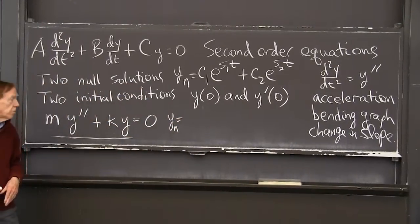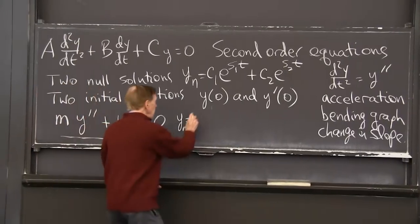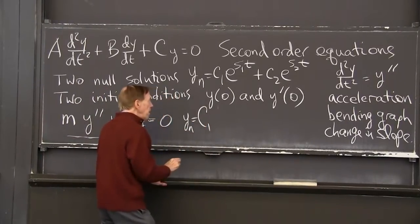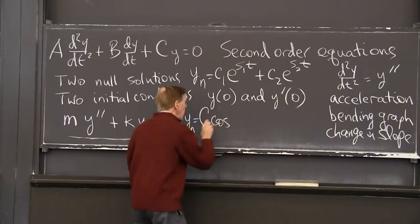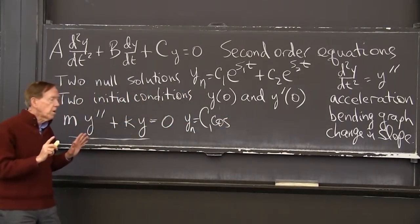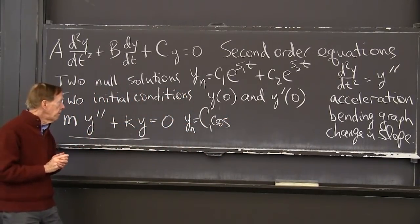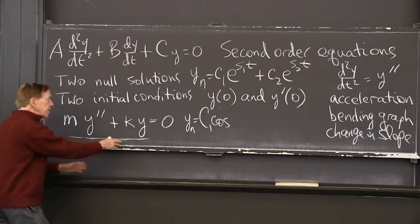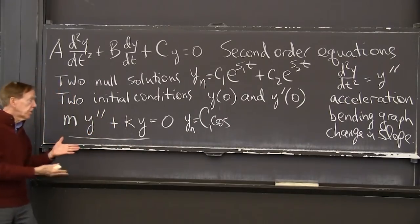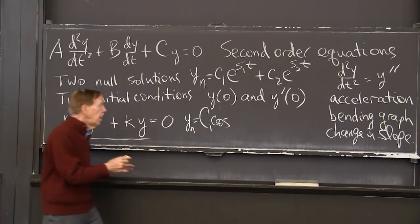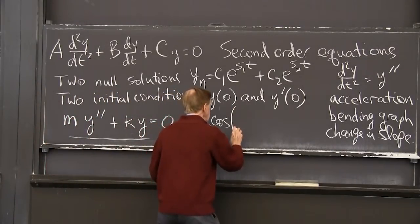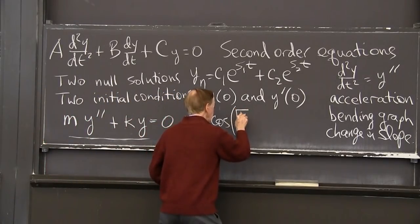So these special solutions here are y_null - I'm finding the null solution. Let me call them C1 times a cosine. And now I have to figure out the cosine of what? I want the cosine to satisfy, to be a null solution, satisfy my equation. Let me put it in.